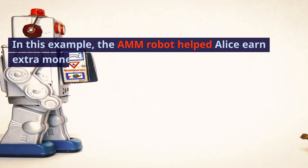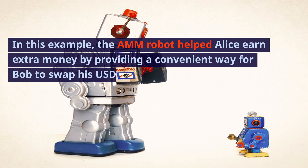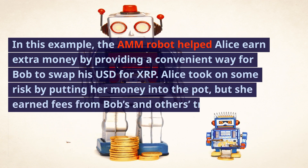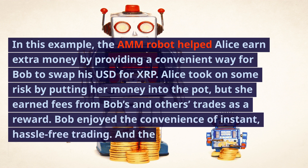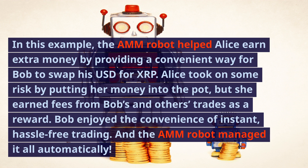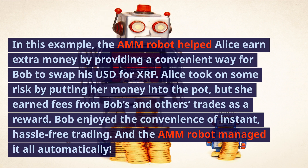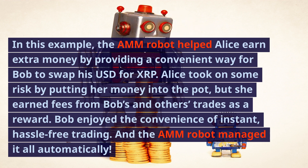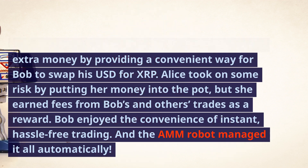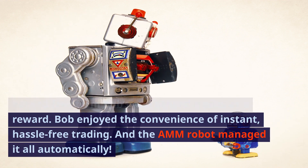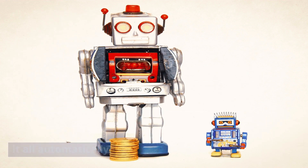Conclusion: in this example, the AMM robot helped Alice earn extra money by providing a convenient way for Bob to swap his USD for XRP. Alice took on some risk by putting her money into the pot, but she earned fees from Bob's and others' trades as a reward. Bob enjoyed the convenience of instant, hassle-free trading, and the AMM robot managed it all automatically. If you enjoy explainers like this one, share them with your friends and let me hear your thoughts.